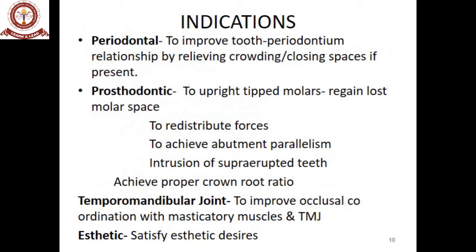Indications for adult orthodontics include periodontal reasons — improving the tooth-periodontium relationship by relieving crowding or closing spaces, as crowding increases plaque accumulation. Prosthodontic indications include uprighting a tipped molar, regaining lost molar space, redistributing forces to achieve abutment parallelism, and intrusion of supra-erupted teeth to achieve proper crown-root ratio. Temporomandibular joint indications include improving occlusal coordination with masticatory muscles. Aesthetic indications aim to satisfy the patient's aesthetic desires.